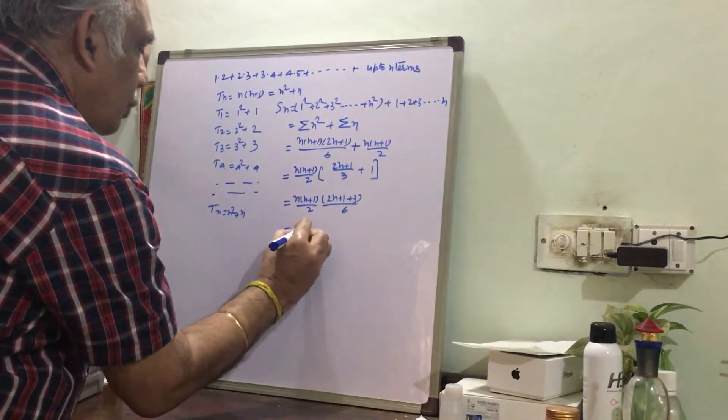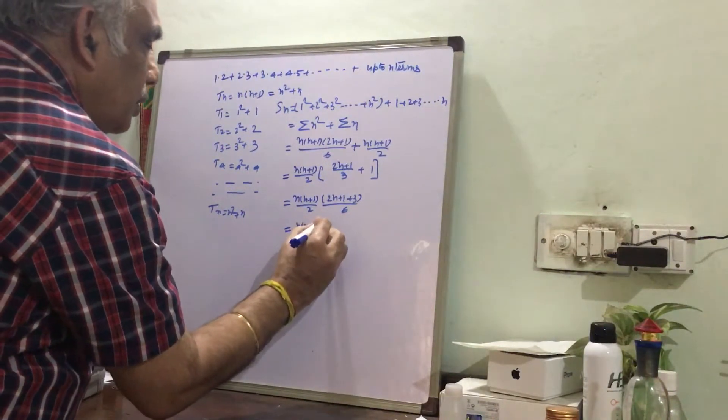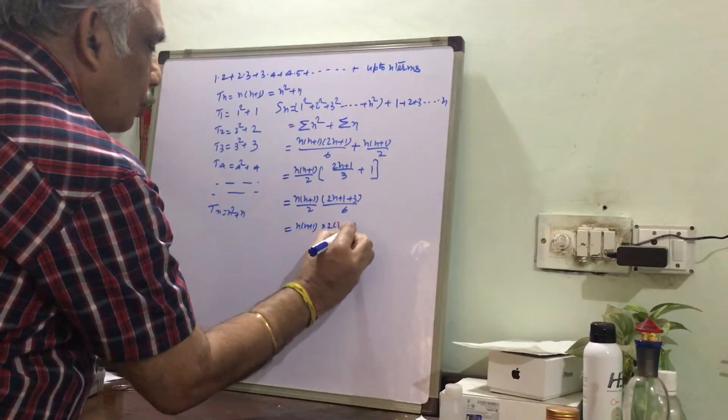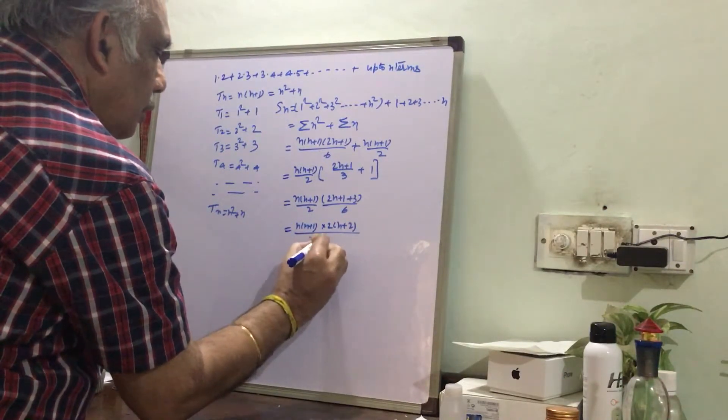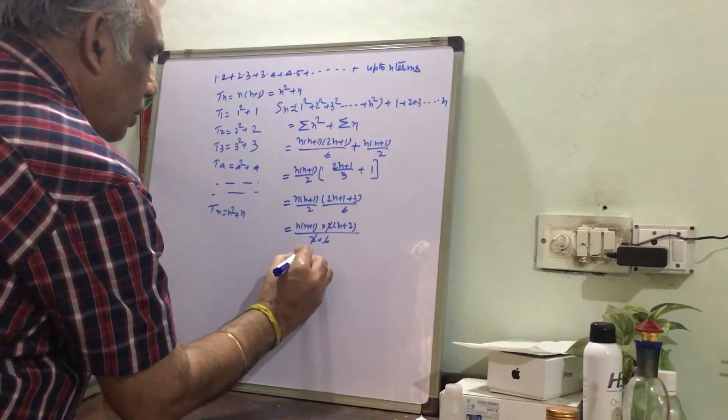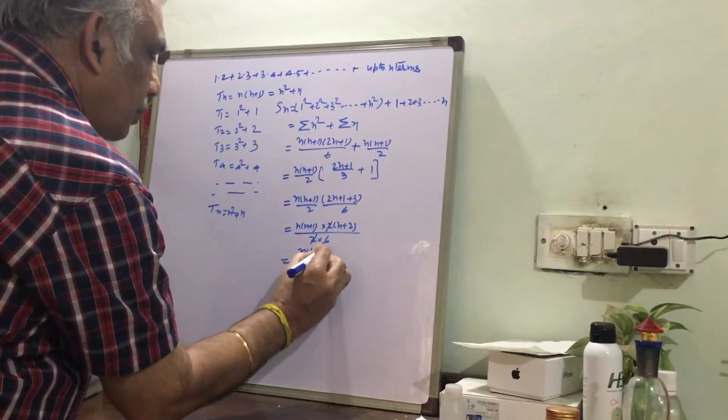Or we can write it as n(n+1), here it is 2n plus 4, so we take 2 common, n+2, divided by 2 into 3. These two cancel with this, we are left with n(n+1)(n+2) by 3.